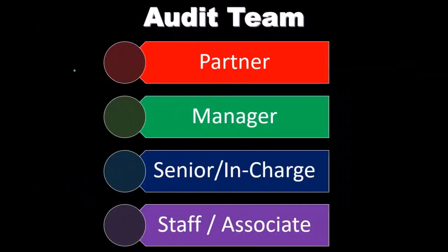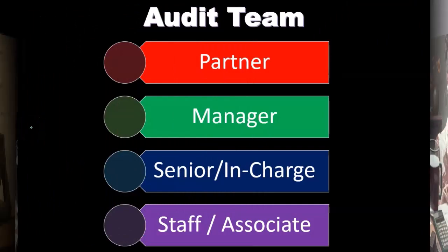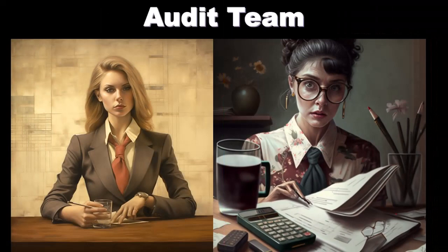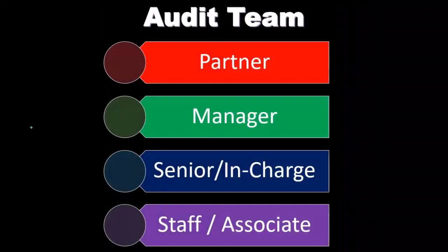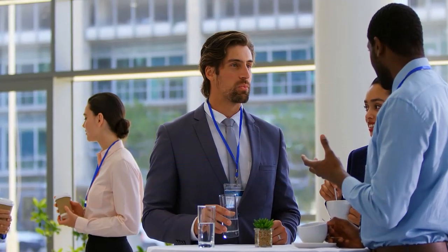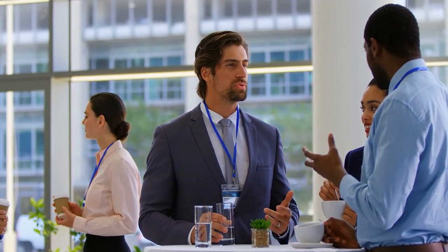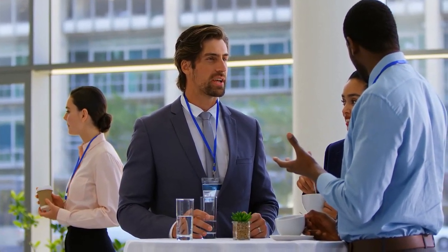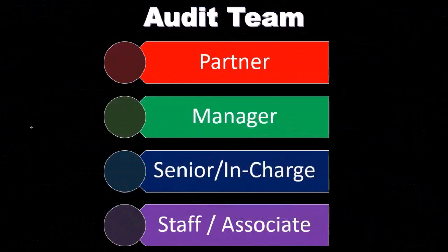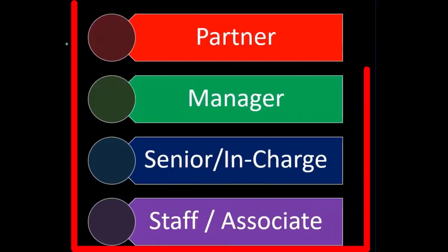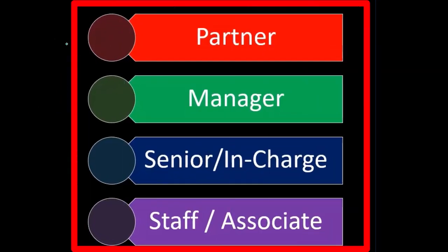The person ultimately in charge is going to be the partner. If you think about a CPA firm — a public accounting firm — it's organized in the format of partners. The partners are the top tier; they're like the management of an organization, equivalent to the CEO of a publicly traded company or the top management of the organization.